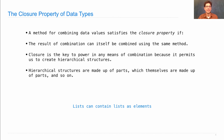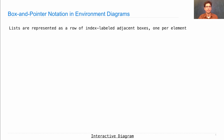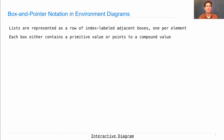A simple example of this is that lists can contain other lists as elements. Box and pointer notation helps us represent that closure property of lists. Lists are represented as a row of index-labeled adjacent boxes, one per element, and each box contains either a primitive value or points to a compound value.